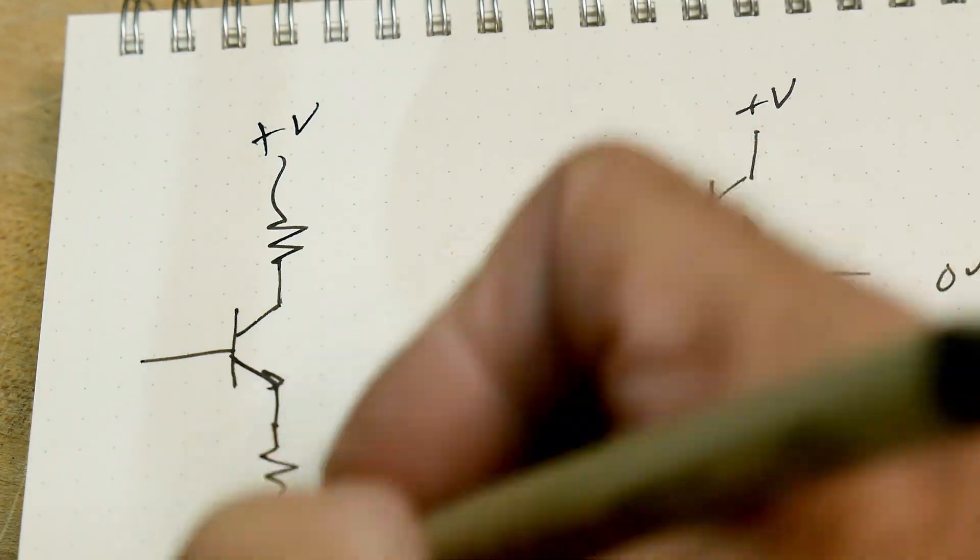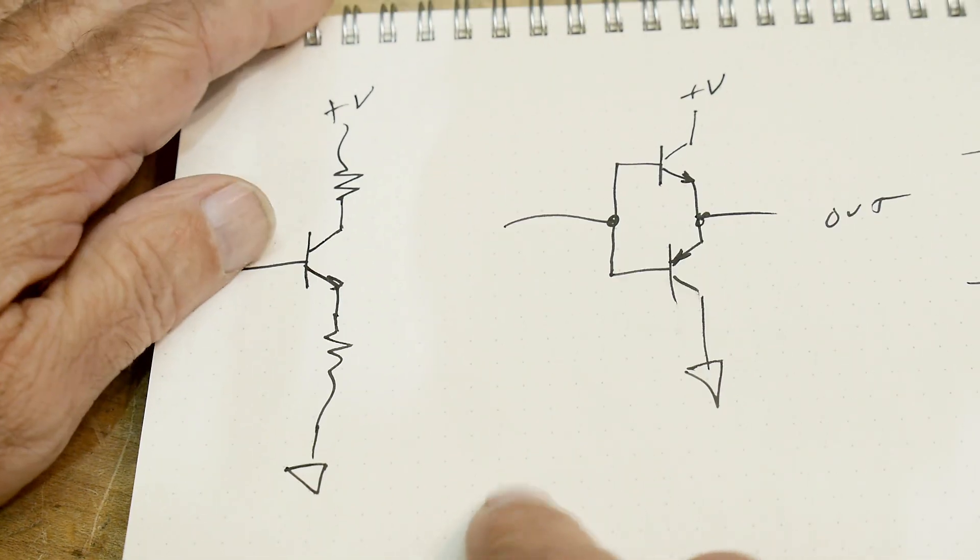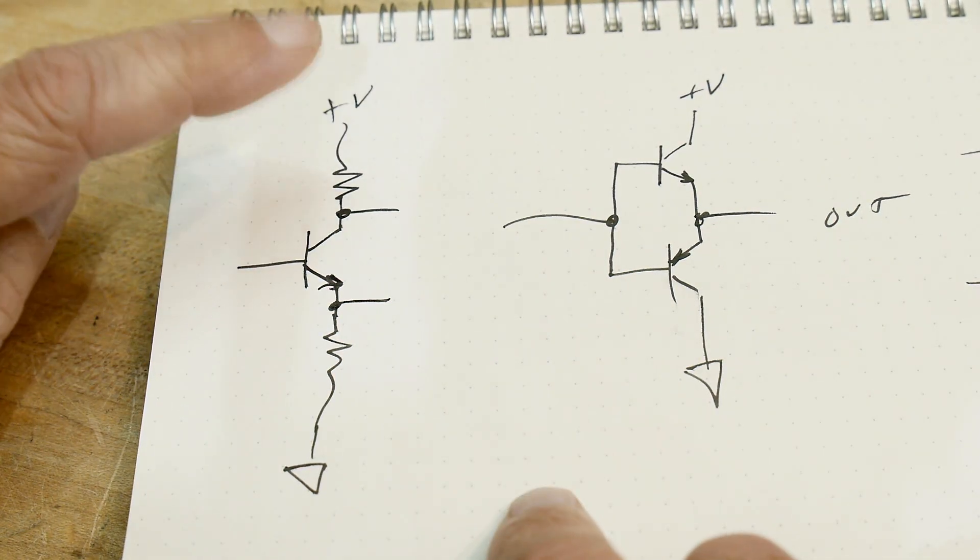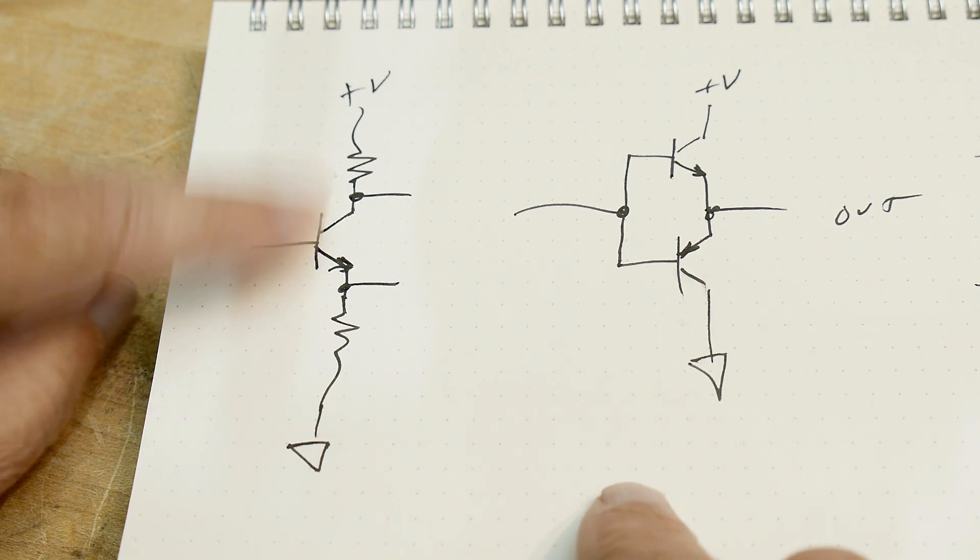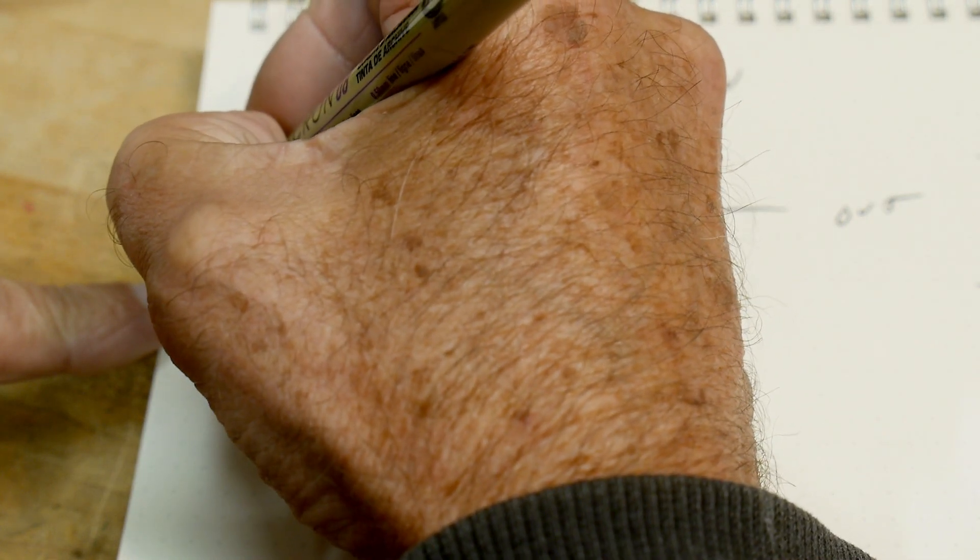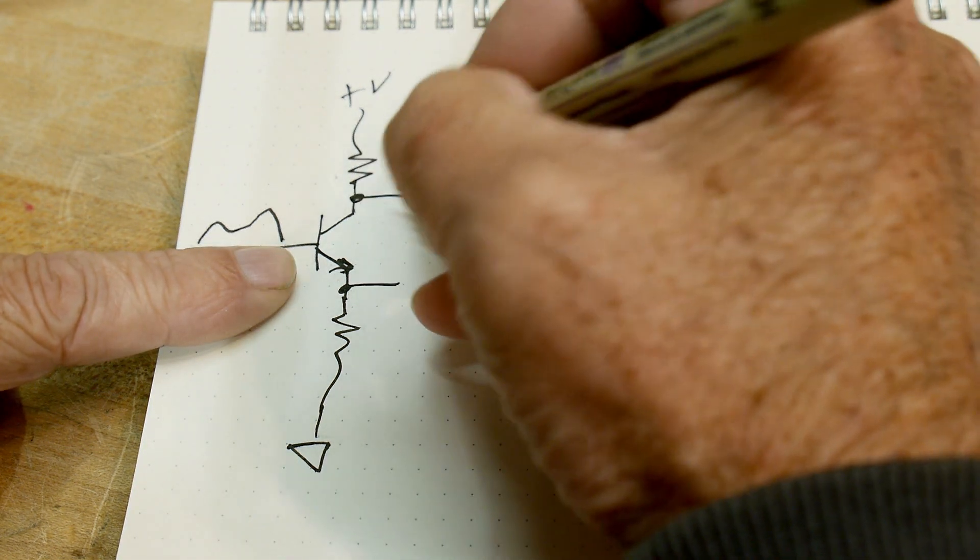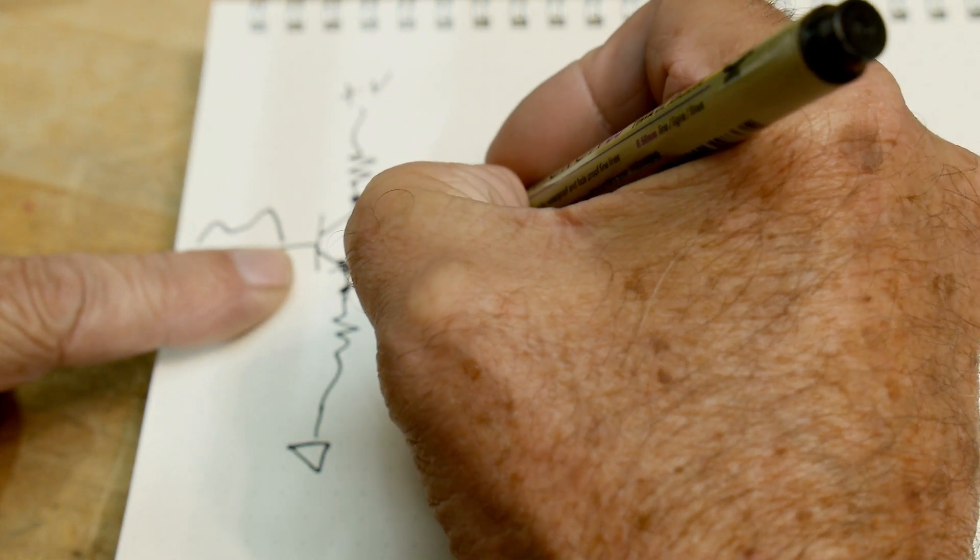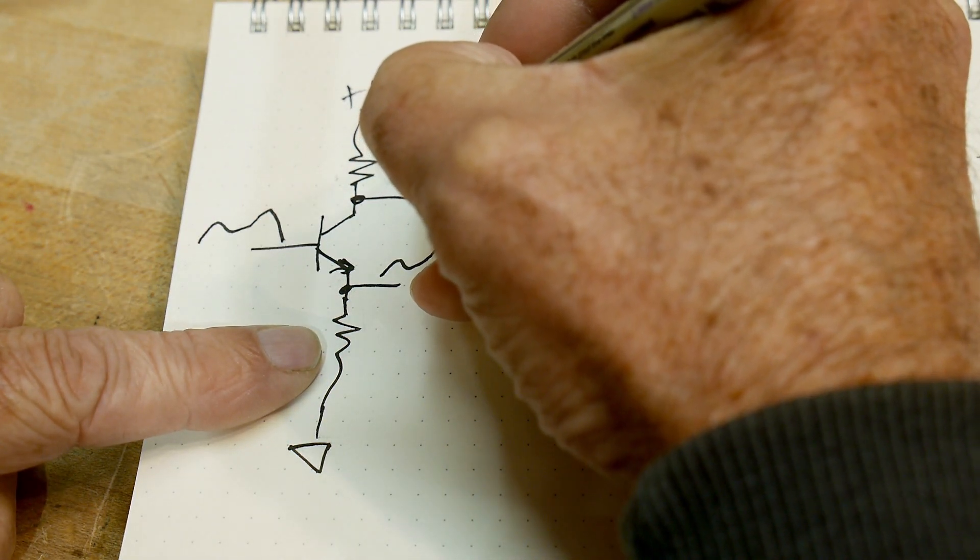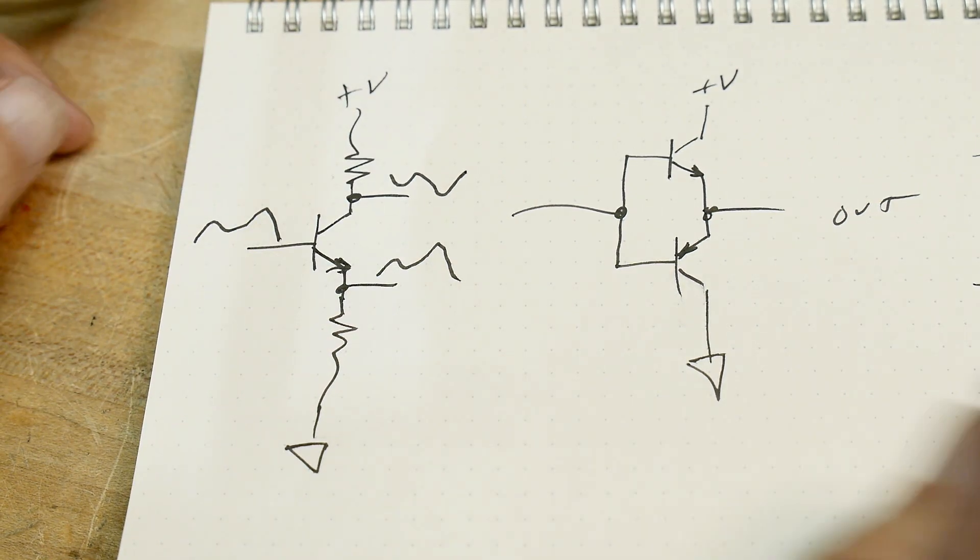Let's talk about phase splitters. Resistor, resistor, plus V, ground. What does this circuit do? If we look here and we look here, we find that these two things are 180 degrees out of phase. When this guy goes up, this guy goes down. When this guy goes down, that guy goes up. So if you had some waveform here doing some wiggle, then over here it will have an in-phase wiggle.